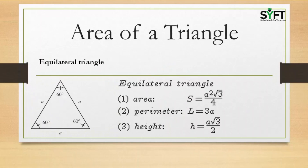For an equilateral triangle, all sides are equal and therefore all angles are also equal — each being 60 degrees, since the sum of angles of a triangle is 180 degrees. The area of an equilateral triangle with side A is equal to (root 3 by 4) times A squared.